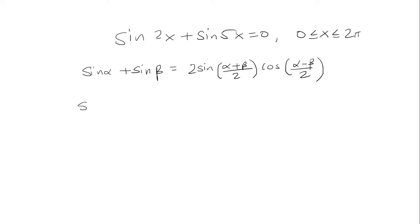Here alpha will play the role of 2x and beta 5x. So it's 2 sine, I'm going to add the two angles, 2x plus 5x, that's going to give me 7x. And then I'm going to subtract the two angles, so 2x minus 5x. And now I just need to simplify this.